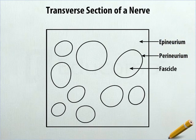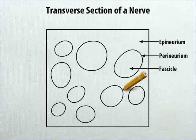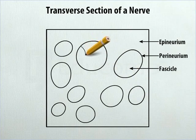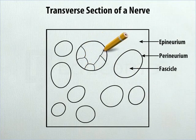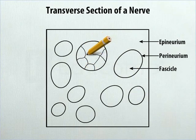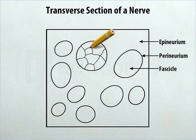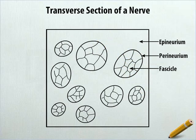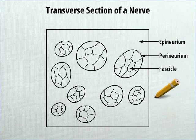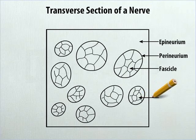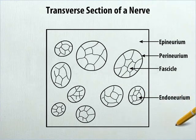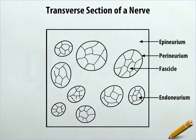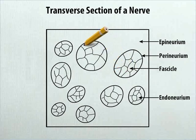In each perineurium, draw a network of irregular lines and label any one block formed by the network of irregular lines as endoneurium. Fill each endoneurium with dots.